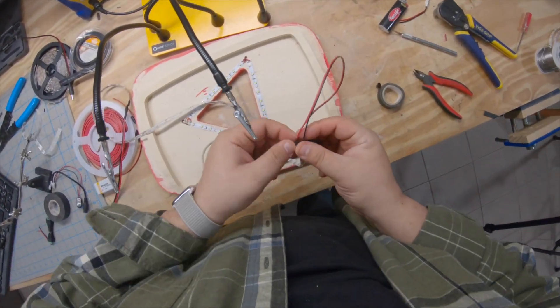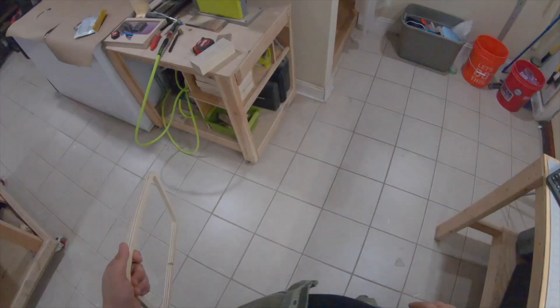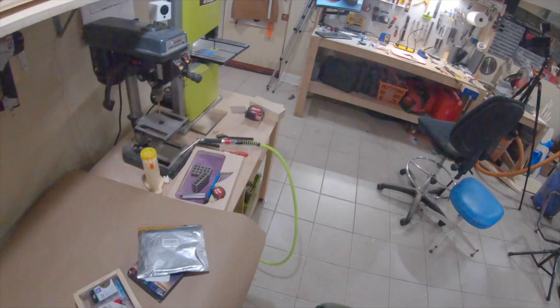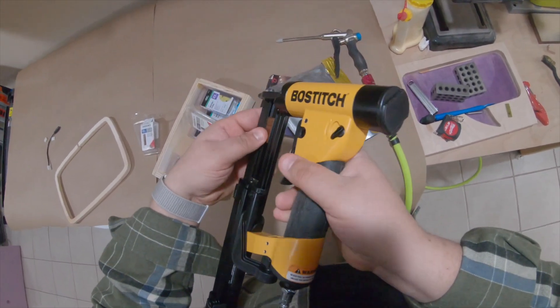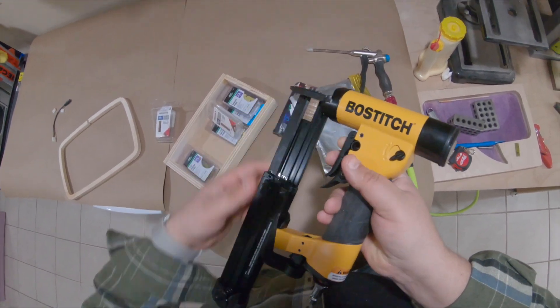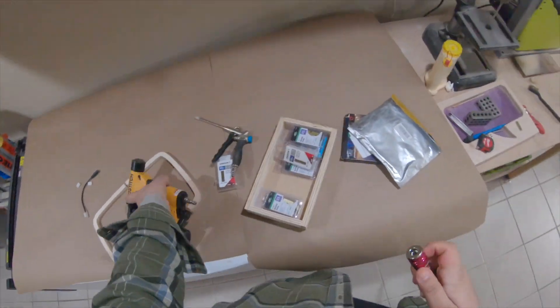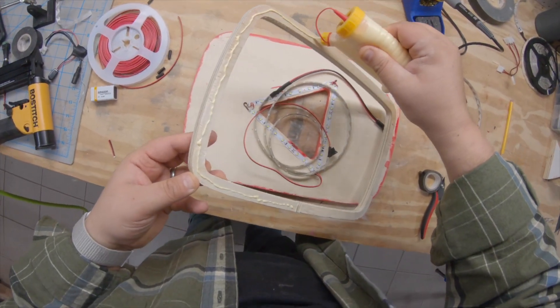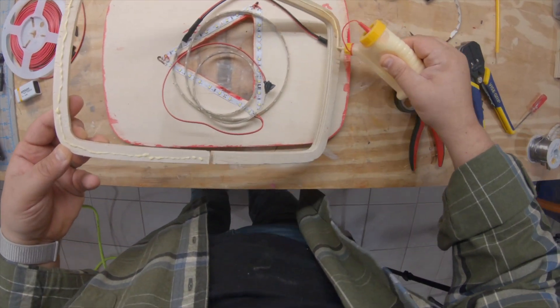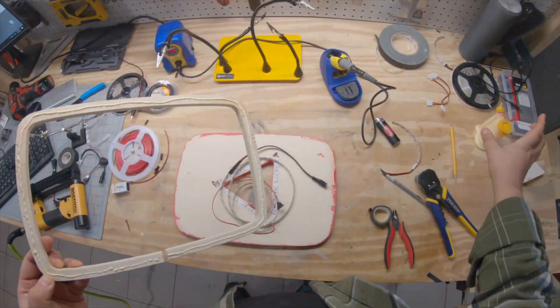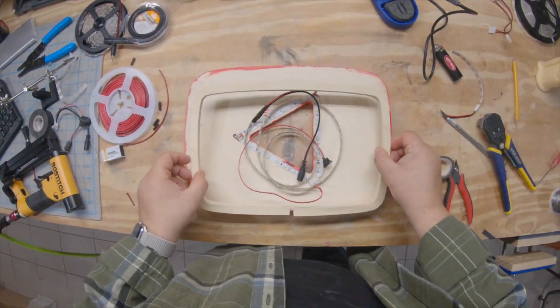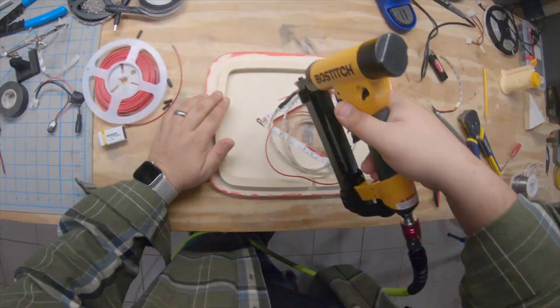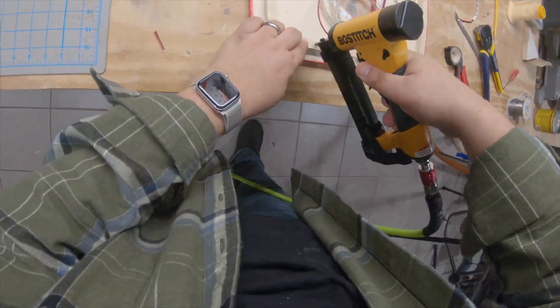You know everybody has an 18 gauge brad nailer and I really think everybody would be better served with a 23 gauge pin nailer. 23 gauge pin nailer is awesome - it has just as much holding power as the brads for the stuff I use but they're tiny. You can use it on delicate stuff without blowing it apart. It's just super manageable and super handy. I really love my 23 gauge pin nailer.